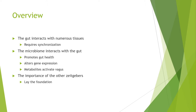Throughout this module, we're going to cover quite a few topics. We're going to discuss how the gut interacts with the numerous tissues throughout our bodies and how that requires synchronization of the microbial clock to our gut and these other tissues. We'll discuss specifically how the microbiome interacts with the gut by promoting gut health, altering gene expression, and the different metabolites which can activate the vagus nerve and help regulate the stress response. We'll discuss the importance of other Zeitgebers that help lay the foundation for the microbial clock.